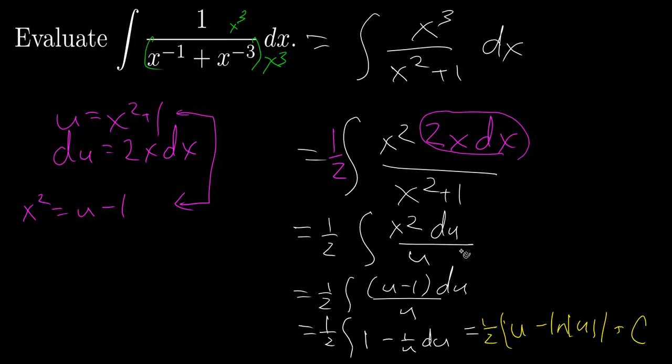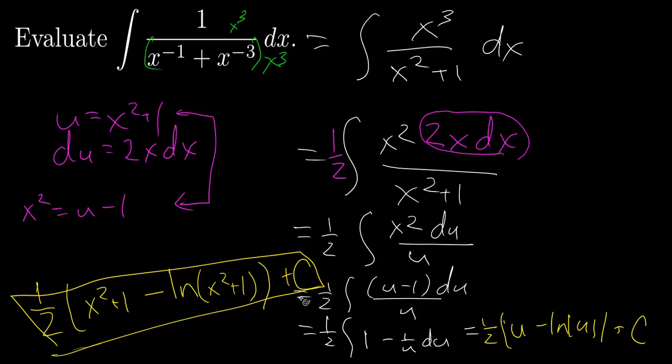Now I need to substitute back in my original variable x squared plus 1 for u to get the answer 1 half times the quantity x squared plus 1 minus the natural log of the absolute value, but x squared plus 1 is always positive. So you don't have to have the absolute value in this problem, plus an arbitrary constant c. And that is my final answer.